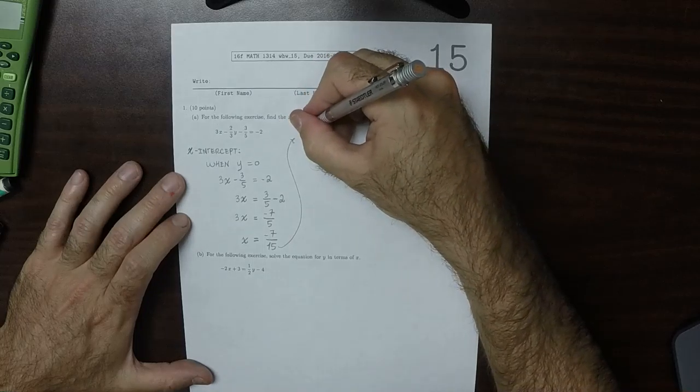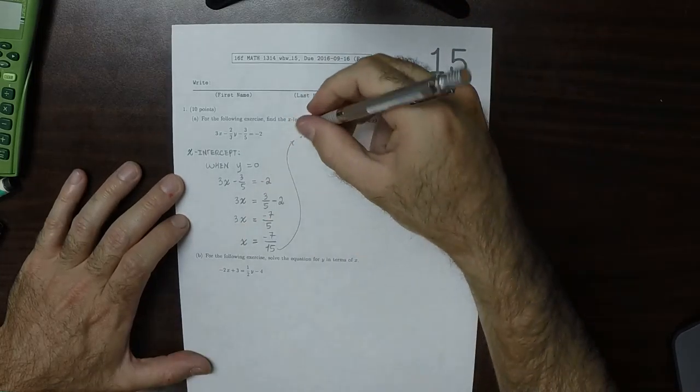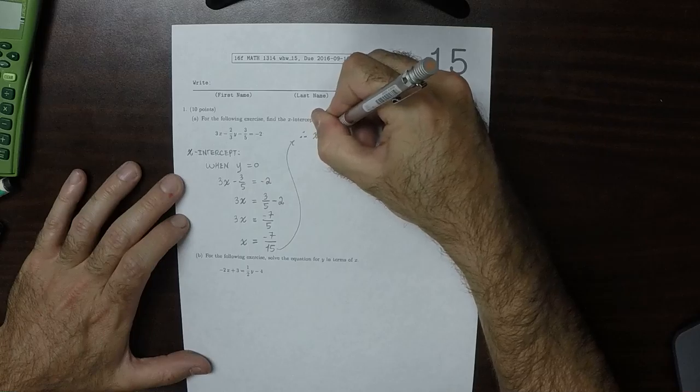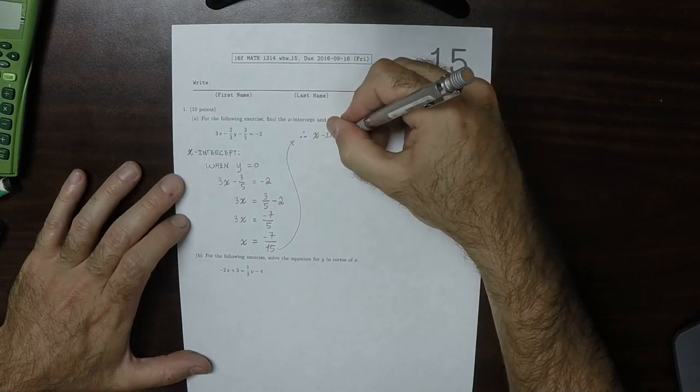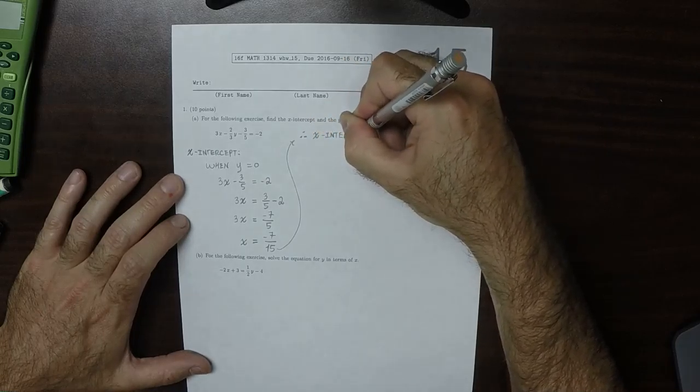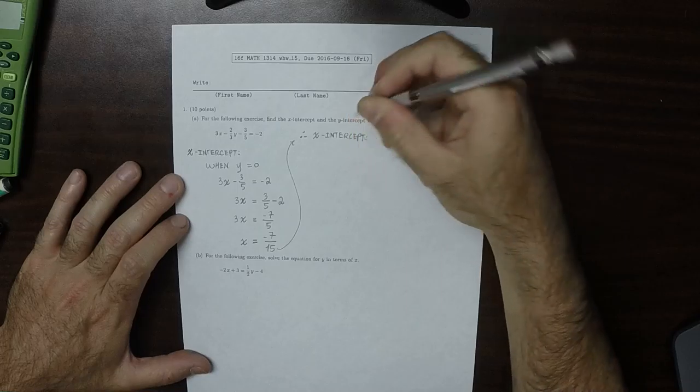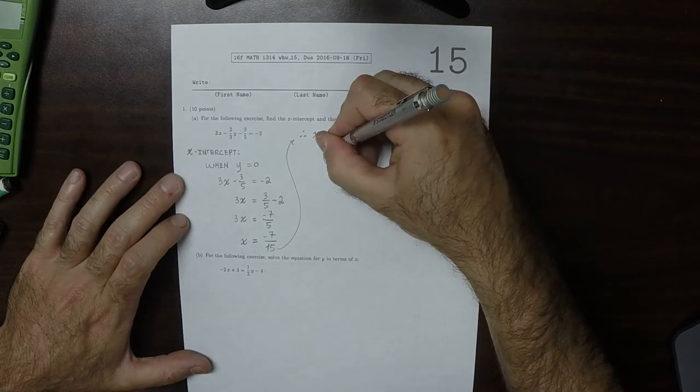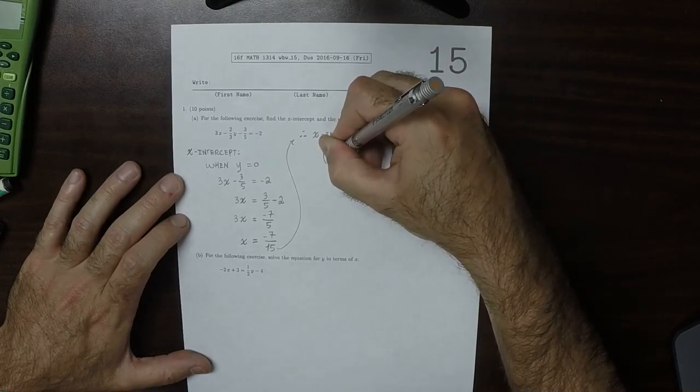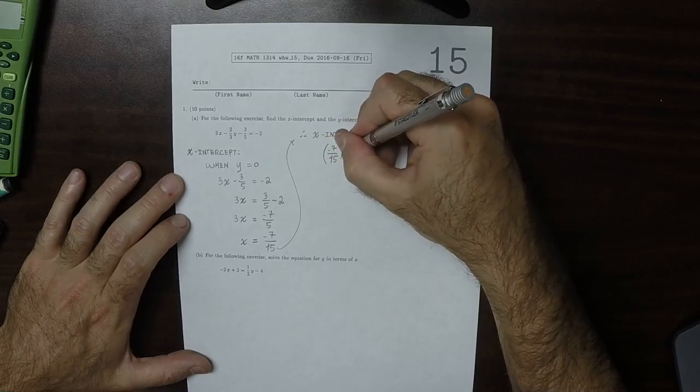So x is negative 7 over 15. And therefore, the x-intercept, because an intercept is a point, is the point negative 7/15, comma 0.